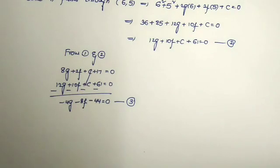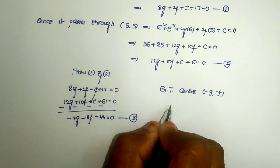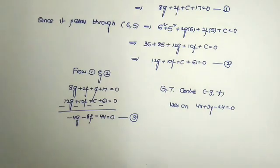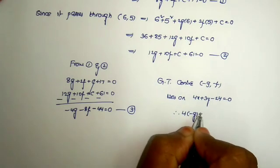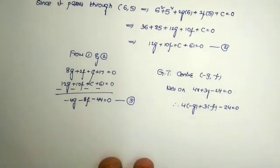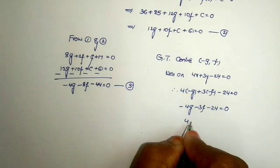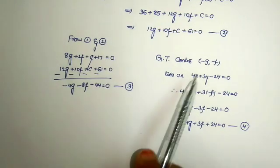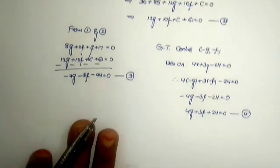The condition given is that the center lies on the line 4x + 3y - 24 = 0. The center of the circle in standard form is (-g, -f). Substituting the center into the line equation: 4(-g) + 3(-f) - 24 = 0, giving -4g - 3f - 24 = 0. Taking the negative cancellation, we get 4g + 3f + 24 = 0. This is Equation 4.